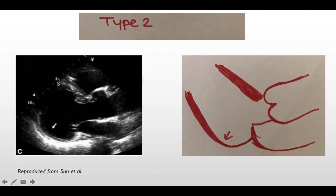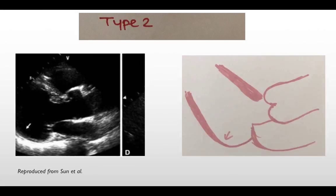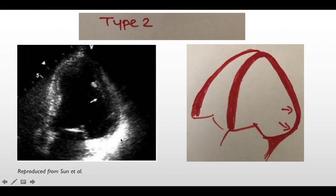The other type of sarcoid involvement, as we mentioned, is aneurysmal dilatation of the inferoposterior or lateral wall of the left ventricle. You can see it clearly here in the left parasternal long axis view, and also in the apical four-chamber view, showing aneurysmal dilatation of the posterolateral or inferior wall of the left ventricle.